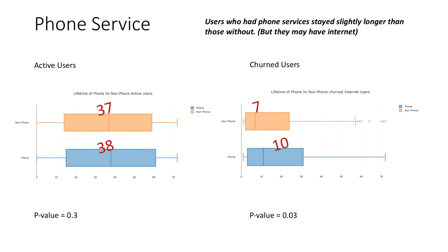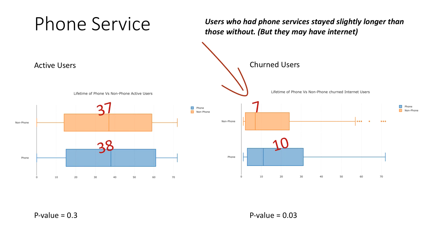Once again, we have a similar slide, but instead of comparing internet and non-internet users, we compare phone and non-phone users. The graph on the left shows the comparison of lifetime of current active phone users and current active non-phone users. Since the p-value after performing the U test is not significant, we cannot reject the null hypothesis — so we really can't establish a difference in tenure for these active phone and non-phone users. For churned phone and non-phone users, however, the p-value is significant, and hence we can say that our churned phone users stayed slightly longer with us than our non-phone users.